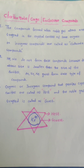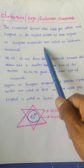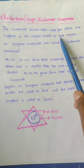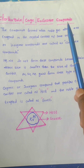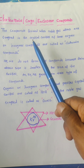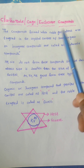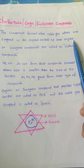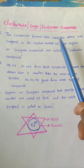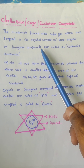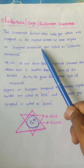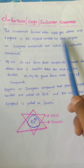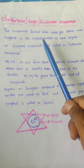The first point is the definition. Clathrate compounds can be defined as the compounds formed when noble gas atoms are entrapped in the crystal cavities of some organic or some inorganic compounds. Generally, these organic or inorganic compounds should have the capability of forming hydrogen bonds, then only we can get these clathrate compounds.